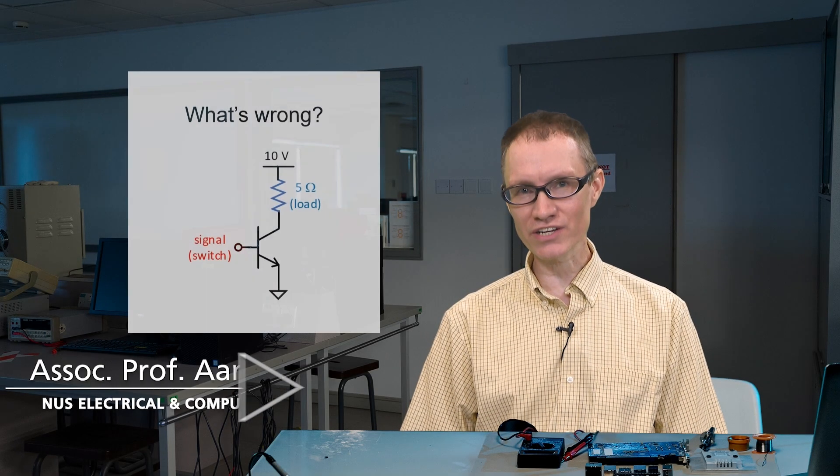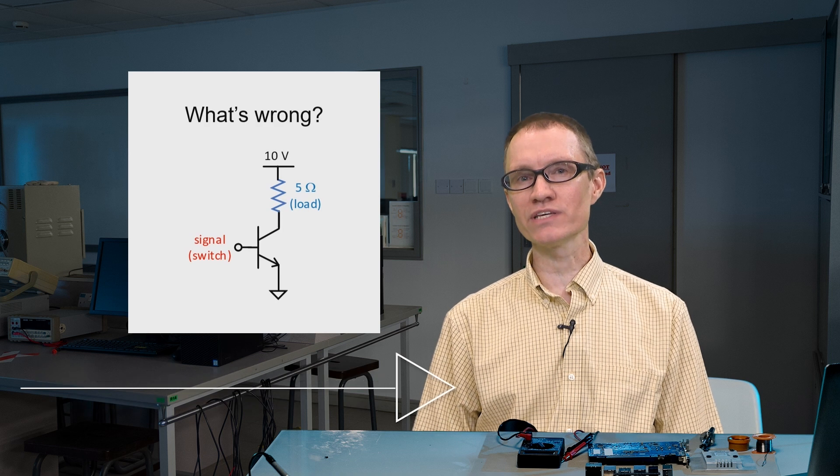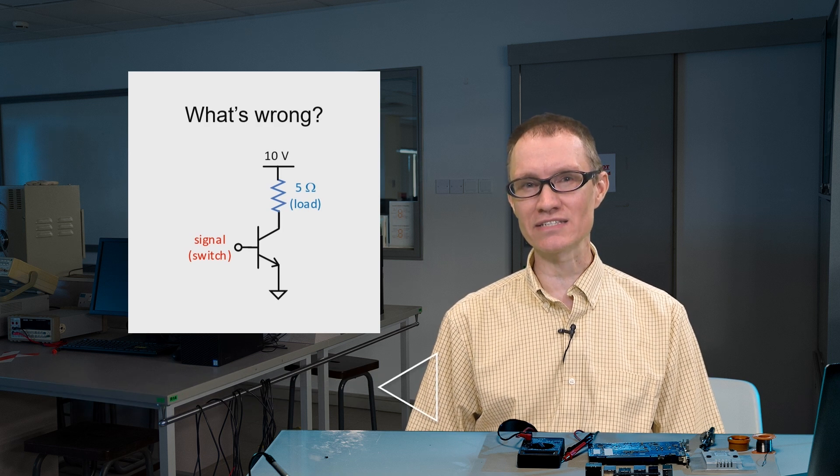Can you tell what's wrong with this circuit? We basically have a 5 ohm load here and we're using the bipolar junction transistor as a simple switch.